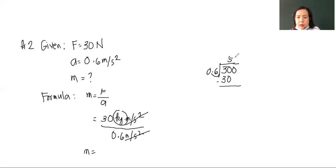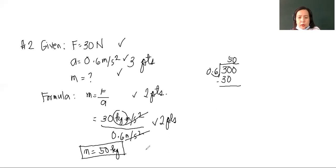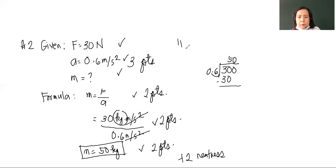The answer is 50 kilograms — that is the mass of the skater. Do not forget to enclose your final answer in a box. For our points: three points for the given, two points for the formula, two points for the substitution, two points for the final answer, and plus two if there are no erasures, for a total of 11 points for number two.